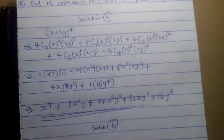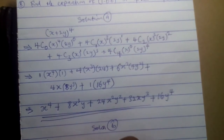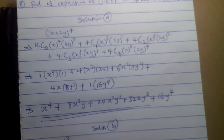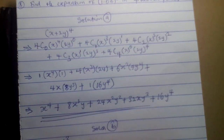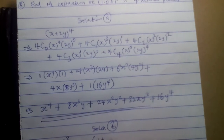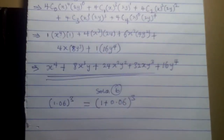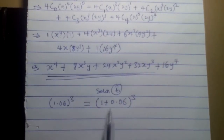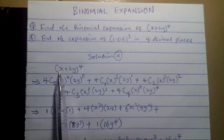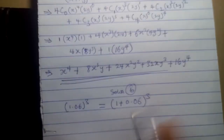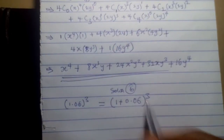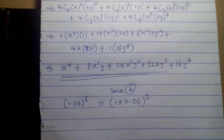Here we have 1.06 raised to the power 3. To expand this, I will split it: let this equal (1 + 0.06) raised to power 3. The reason I split it into two is to have my value A and my value B. Then I make use of the combinatorial method.